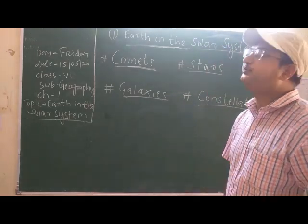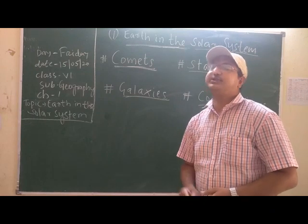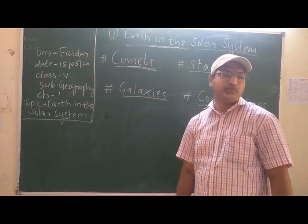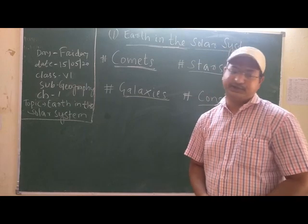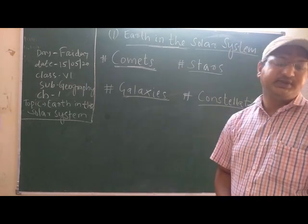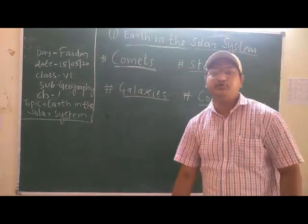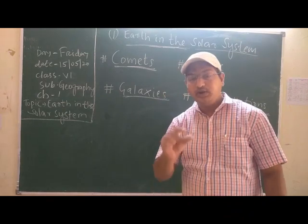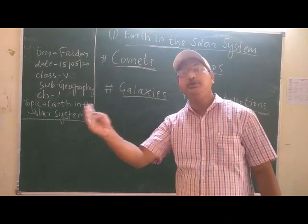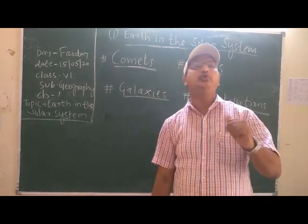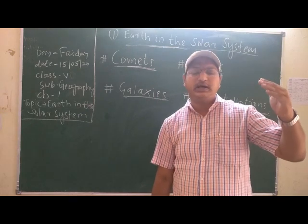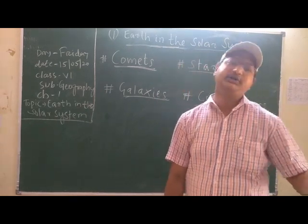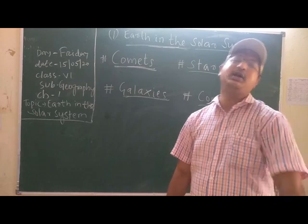Proxima Centauri is the star nearest to the sun, which is 4.3 light years away. Students, you must remember the word 'light years.' What is a light year? Light year is a unit of distance. Due to the larger, farther distance, the unit of distance is not measured in kilometers — it is measured in light years.